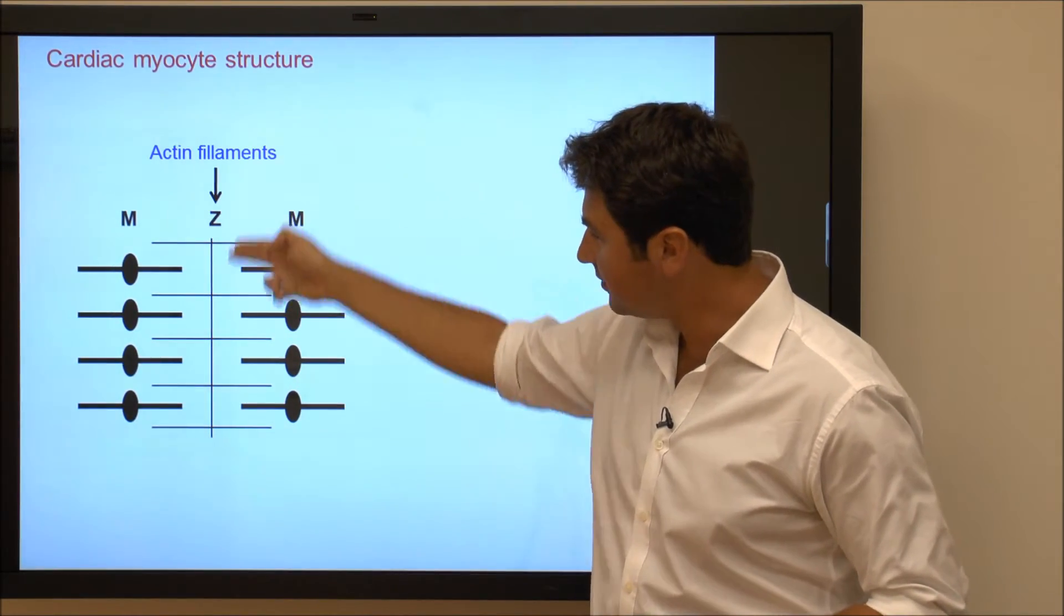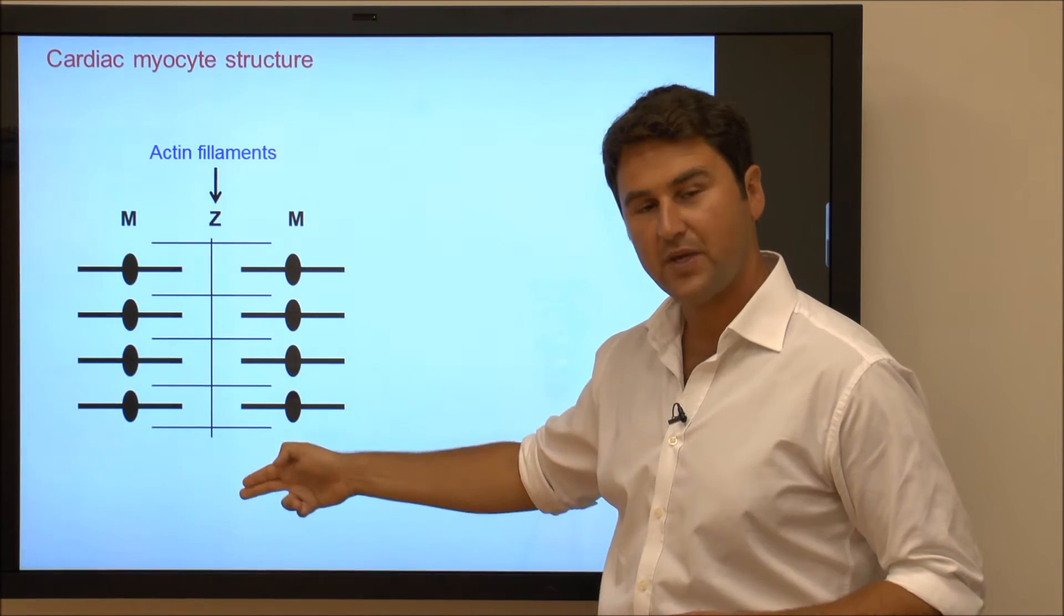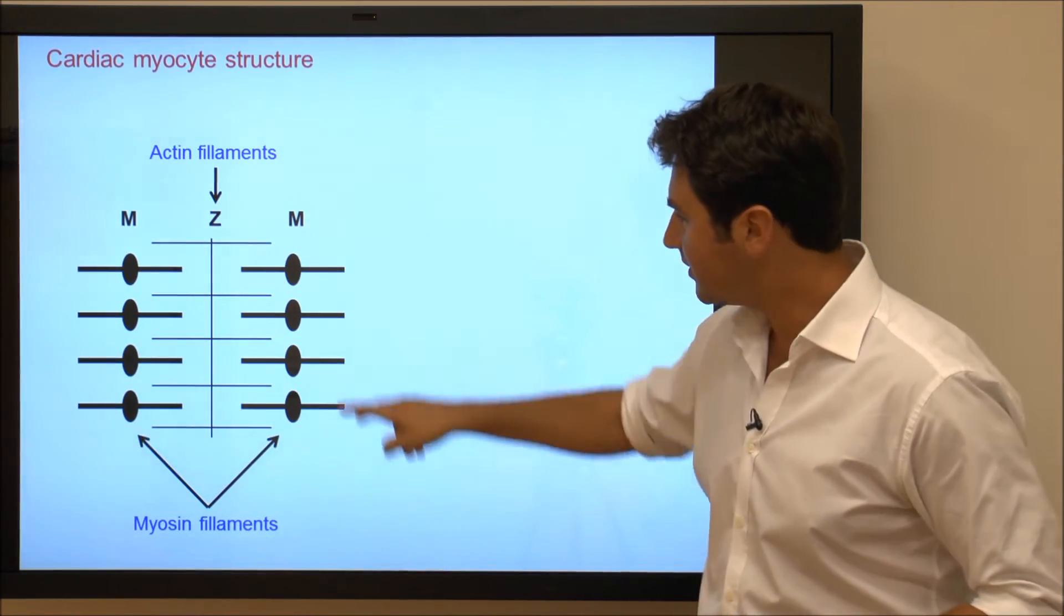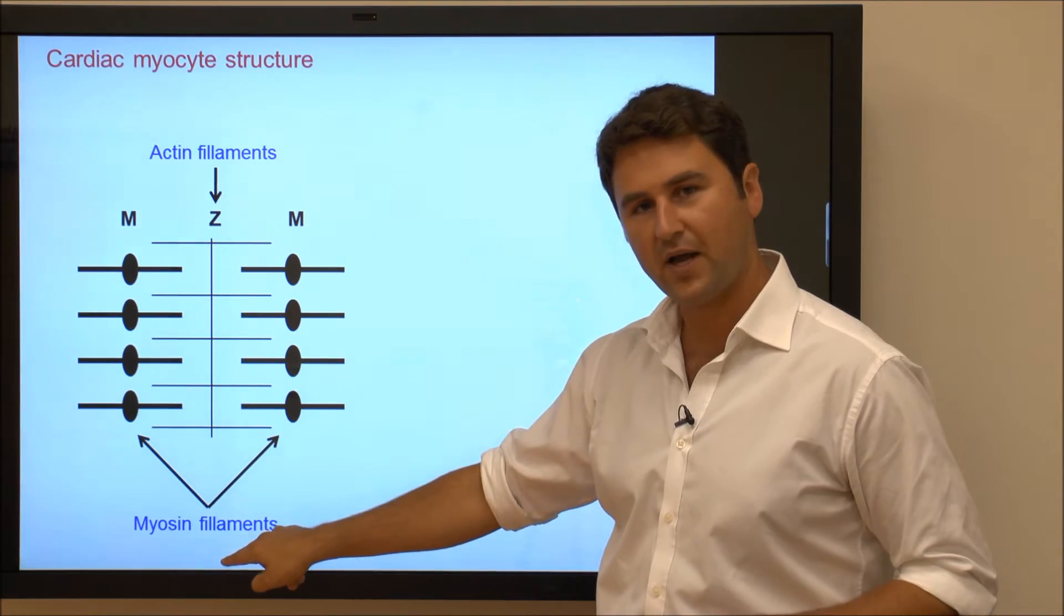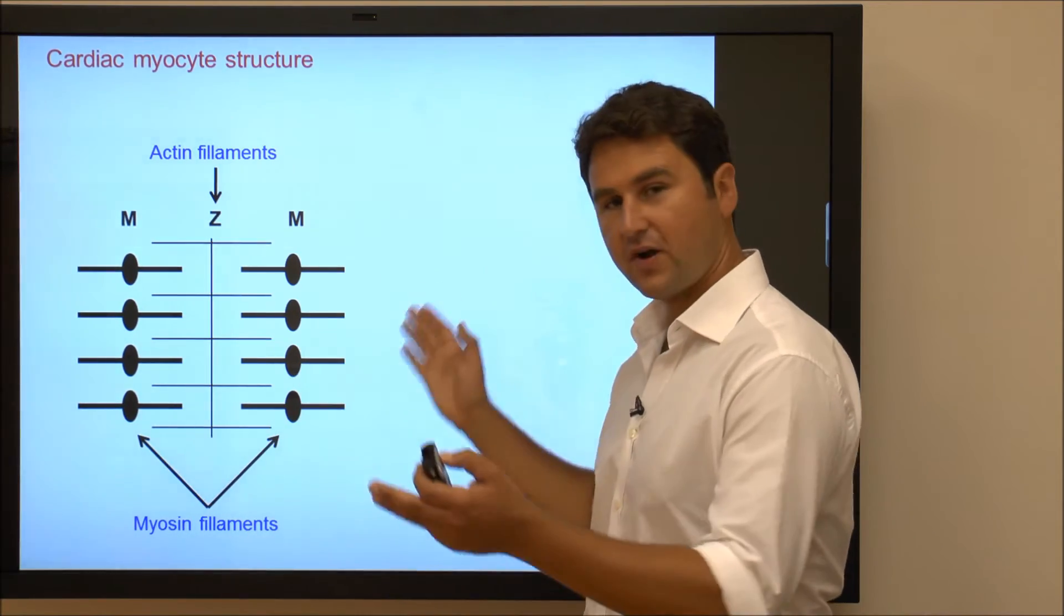Thin filaments made up of actins are anchored at the Z-lines, and thick filaments made up of myosin are surrounding it.